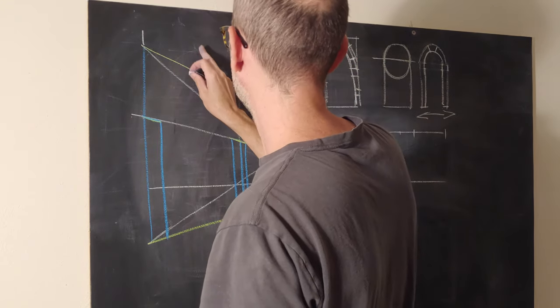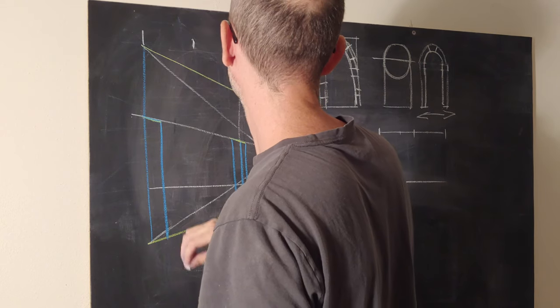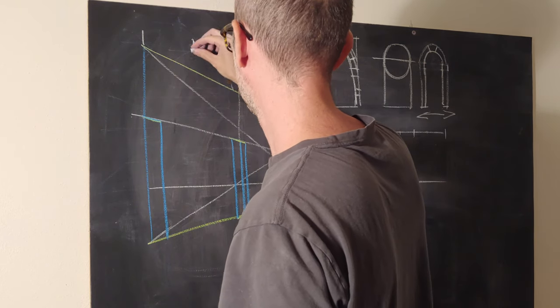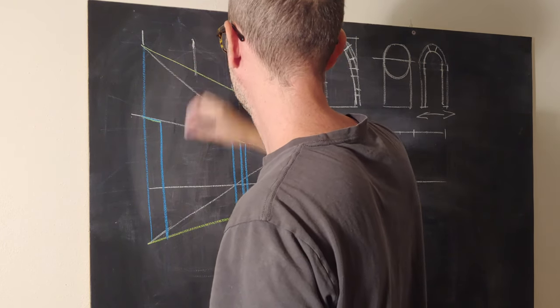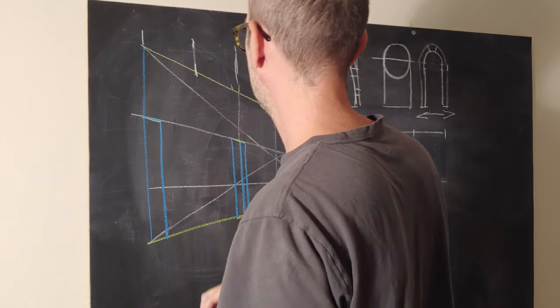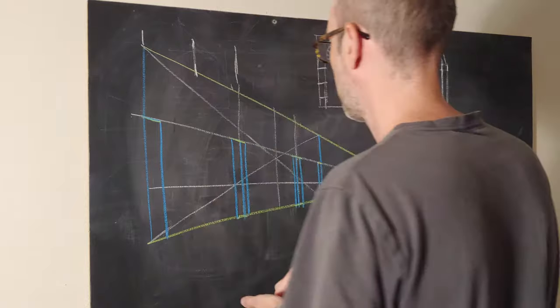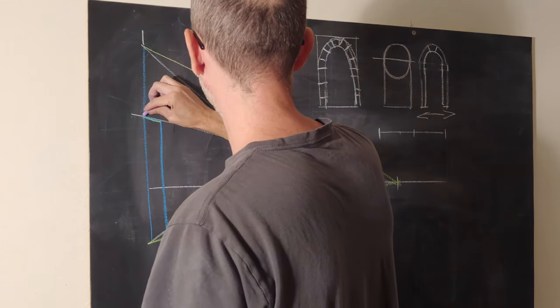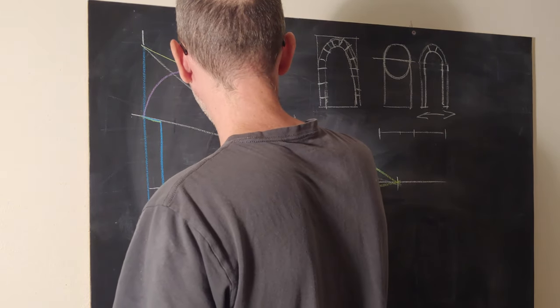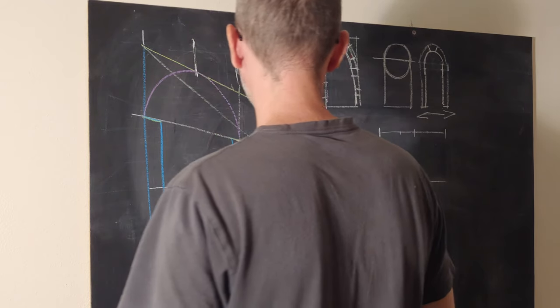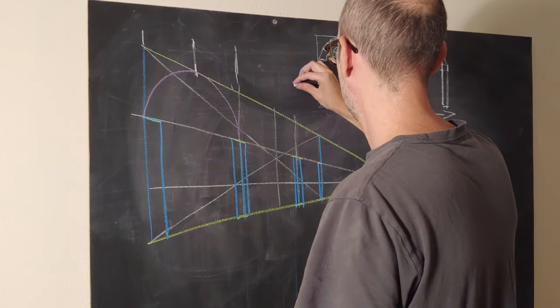So we take our center, which is going to be about here, right? We can double check. Bring our center down. And this is where we're going to hit the top of our arch. So without being very fussy, we can then come in and estimate the top of our arch, right?